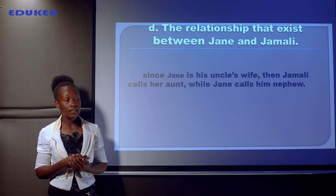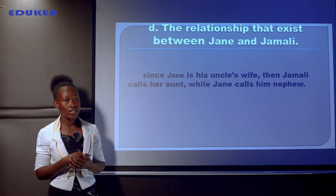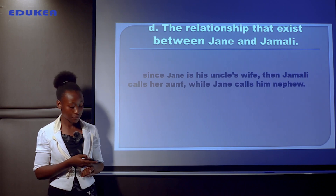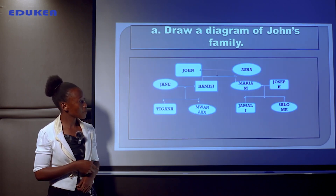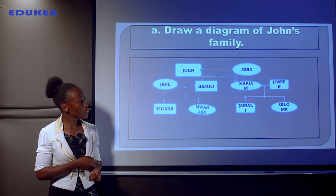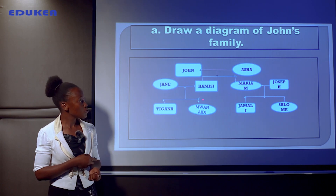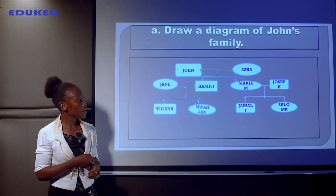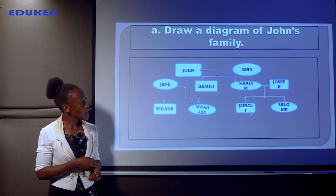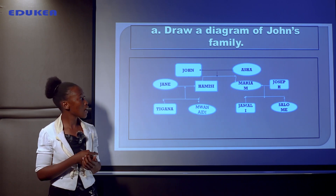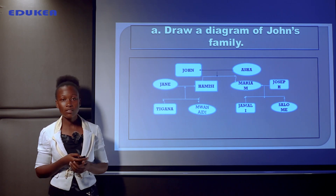The last question is D: what is the relationship that exists between Jane and Jamali? Jamali is the child born to Mariam and Joseph. Jamali calls Jane auntie because she is his uncle's wife. Jane calls Jamali nephew.